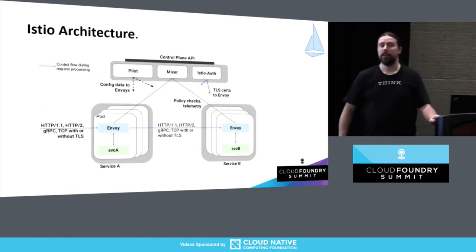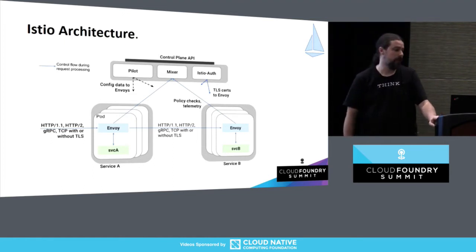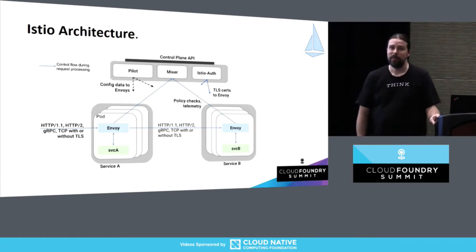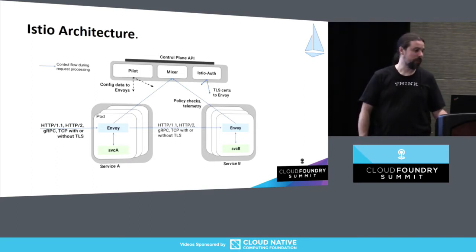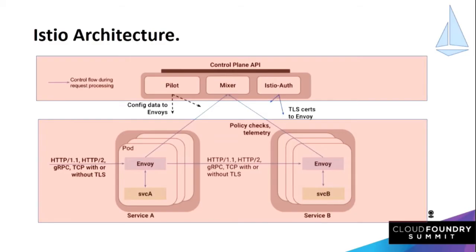Now we start getting a little bit deeper — this is the Istio architecture diagram. It explains pretty much everything you need to know about Istio in one diagram. They divide things loosely into a control plane and a data plane. The data plane is basically a bunch of services — service A and service B — that talk to each other, exchanging data, getting on with the usual business of being a service.